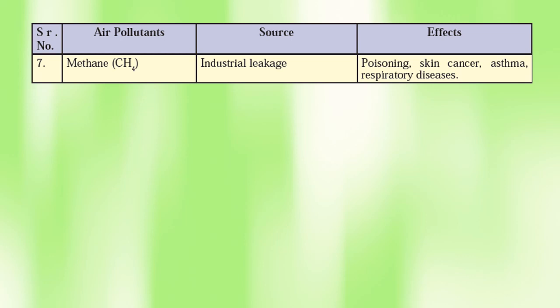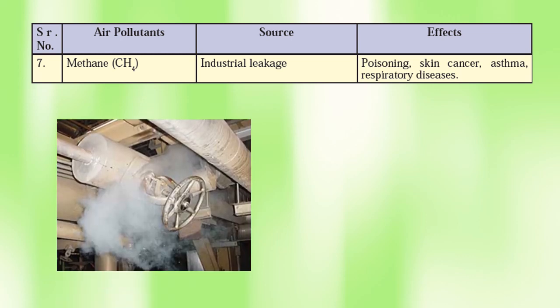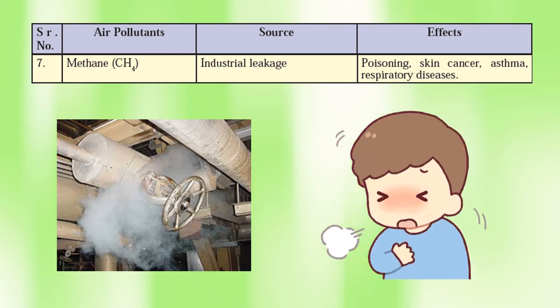Number seven, methane. Source: industrial leakage. Effects: poisoning, skin cancer, asthma, and respiratory diseases — these are the various effects of inhaling methane gas.